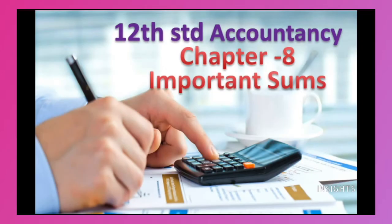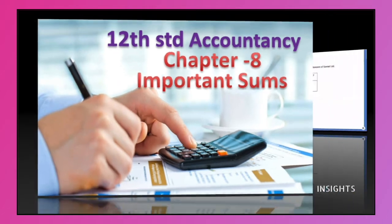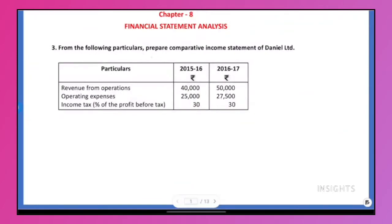Hello students. In Class 12 standard accountancy, the radio syllabus Chapter 8 important 5-mark questions are in this video. In your textbook, we have to work out: from the following particulars, prepare comparative income statement of Daniel Ltd. In this, the key word is 'comparative.'